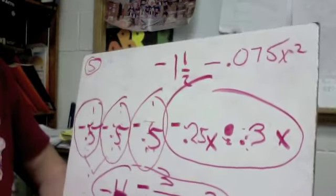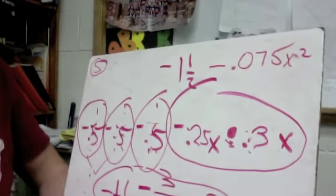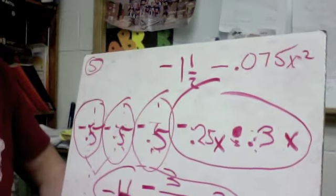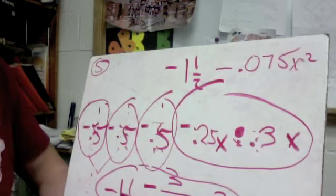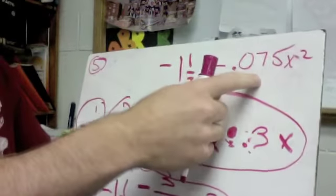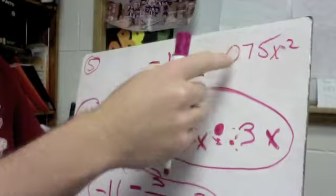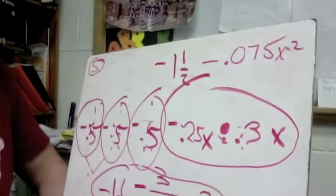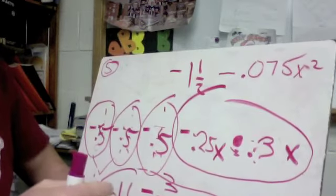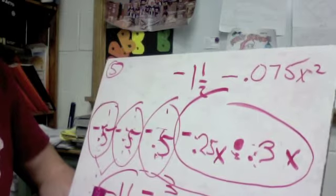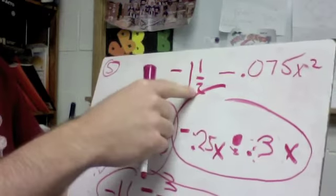Because when I do three divided by forty, three divided by forty is just going to come out to be the point zero seven five that we had up there. So those are going to be the same things. And then of course if we had our negative half down here, or negative one and a half.